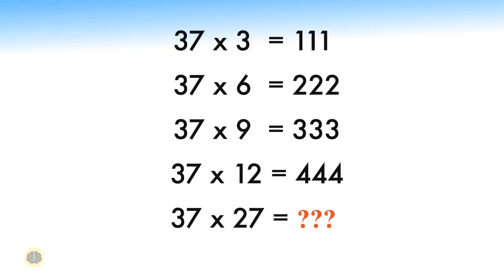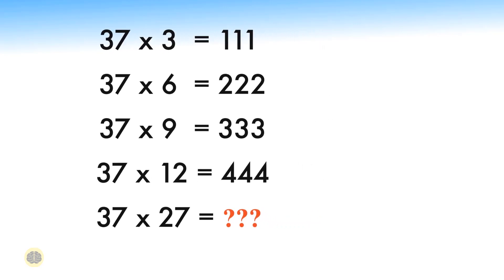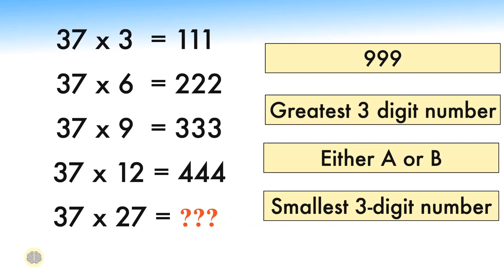Observe the given multiples of 37: 37 times 3 equals 111, 37 times 6 equals 222, 37 times 9 equals 333, 37 times 12 equals 444. Find the product of 37 times 27. You are given 4 options: Option A is 999, Option B is the greatest 3-digit number, Option C is either A or B, and Option D is the smallest 3-digit number. Feel free to pause the video and give it a try before checking the solution.